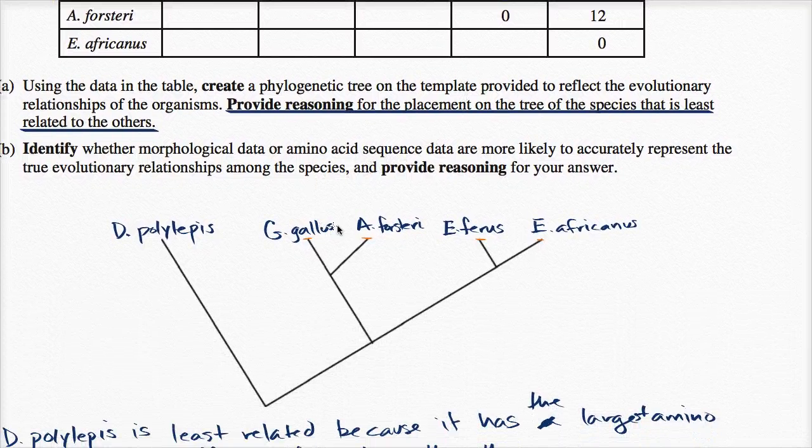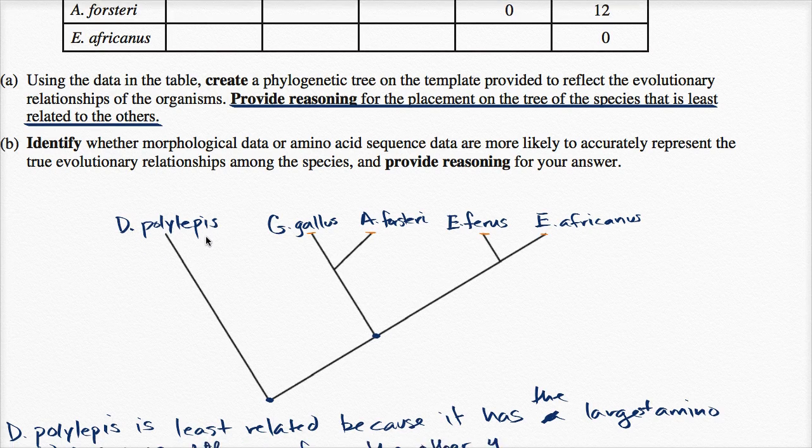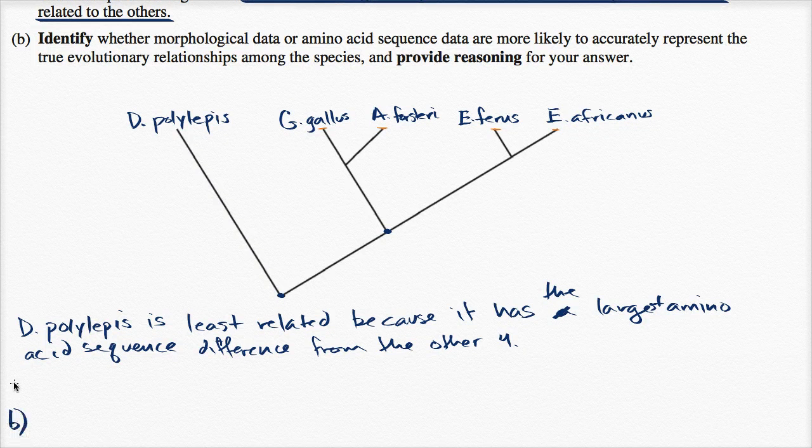And so, that makes sense that even these four share a common ancestor that you don't have to go as far back in time to get to the common ancestor as you do to get to the common ancestor with D. polylepis. All right, let's do part B now. So, that was part A. Let me label that. That was part A. Now, part B.